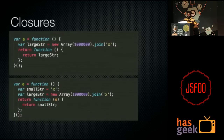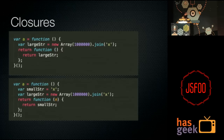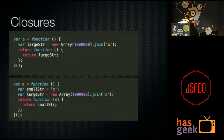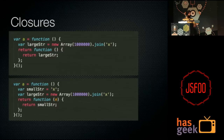Then we have closures. In closures we tend to return functions within functions for context-specific variables, but an important thing to note is whenever we have objects, we should try not to return any references to them — because as you see in the code, since it has a reference to the large string, it will hold that reference forever and it will not be garbage collected. A small change where we are not returning the object means the lower example will not have any leaks.